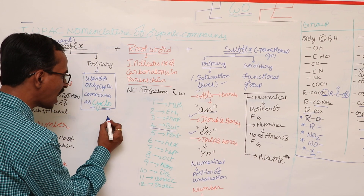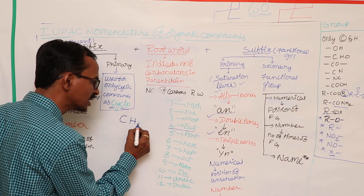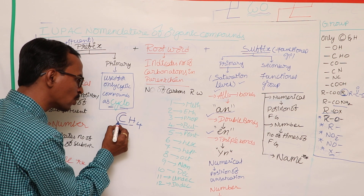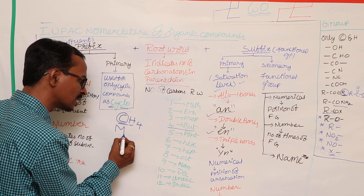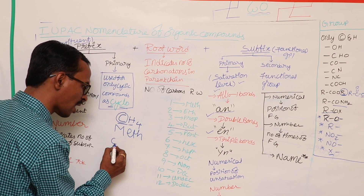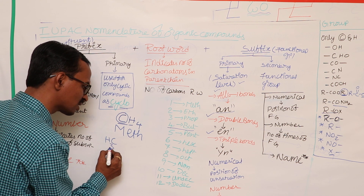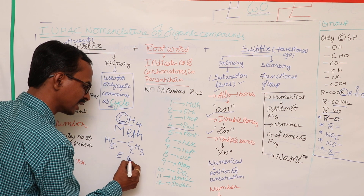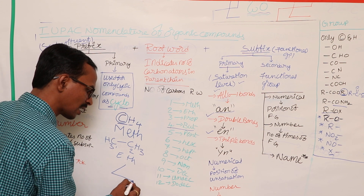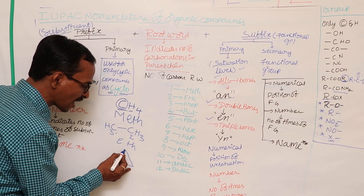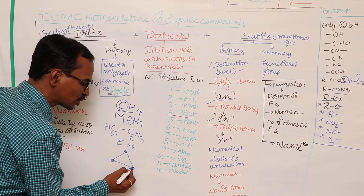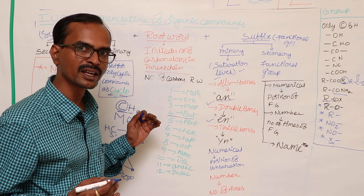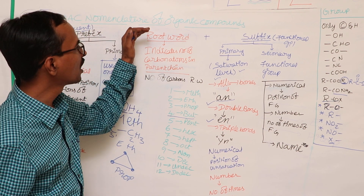Let us have an example. Here I have a compound with the structure CH4. As it has only one carbon atom, the root word is meth. And if we have a compound with the molecular formula CH3-CH3, as it has two carbon atoms, the root word is eth. Let me take another compound like a triangle — here we have three carbon atoms, so it should have the root word prop. Based on the number of carbon atoms in the skeletal structure, we select the root word.